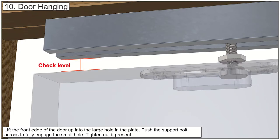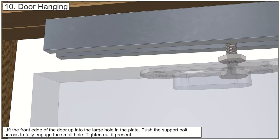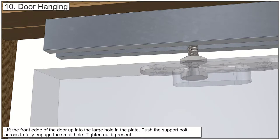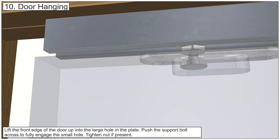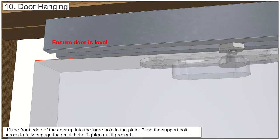Position the front trolley with support bolt above the front mortise. Lift the front edge of the door up over the support bolt and into the large hole in the plate. Push the support bolt across to fully engage into the small hole. Adjust until the door is level. Pull the door firmly down onto the support bolt to secure.